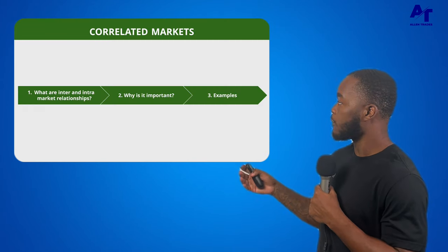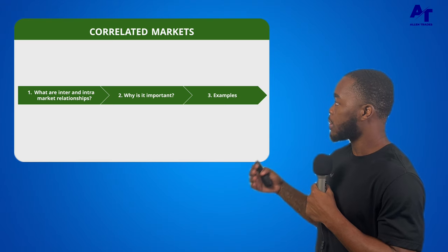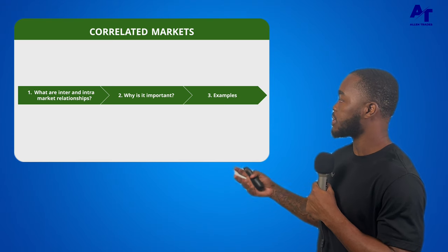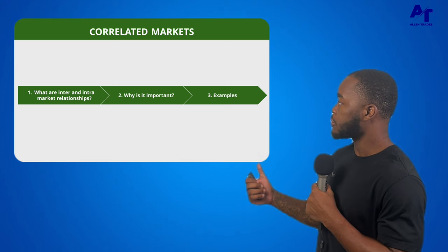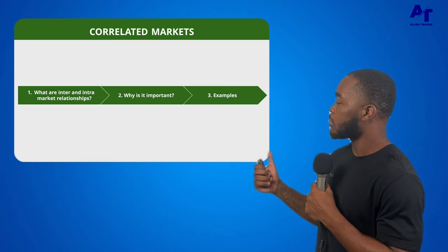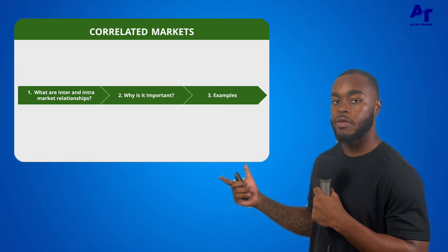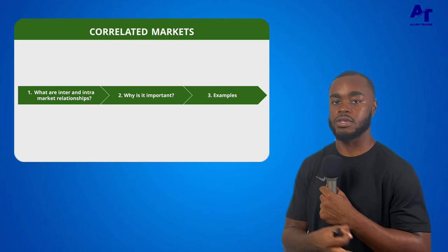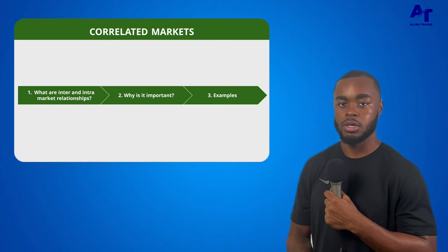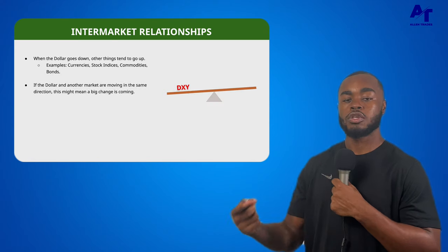We're going to start off by covering correlated markets. We're going to answer three questions in this video. First, what are inter and intra-market relationships? Two, why are they important? And three, we're going to go over some examples. So let's get right into it.